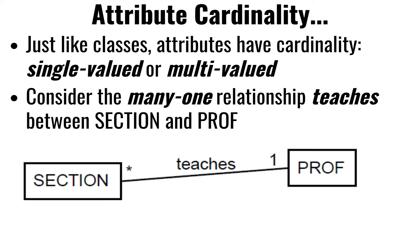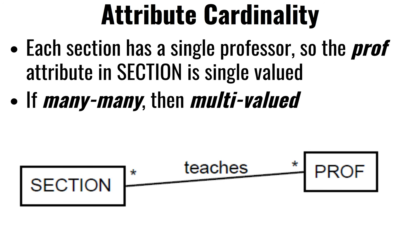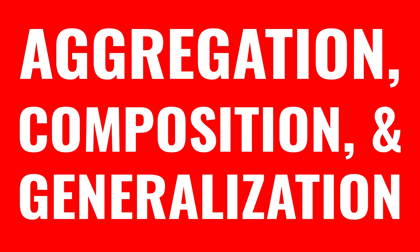Just like there are cardinalities between classes — one-to-many, many-to-many — attributes also have cardinalities: how many of these? Some databases allow you to declare arrays, some don't, that allow you to say there are many of these in a particular attribute. So if you had a professor that used to be a many-to-many relationship, then when you bring it into the section, that might become an array of professors. Just like cardinality in classes, there is also cardinality in attributes.